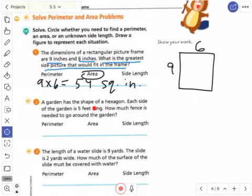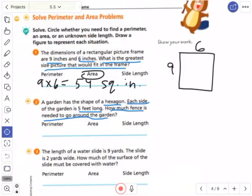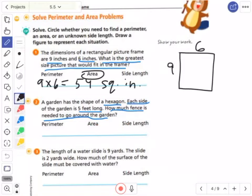Okay, and we'll go to number two. A garden has the shape of a hexagon. Okay, so right away I'm going to outline that hexagon. Each side of the garden, each side is five feet long. How much fence is needed? I'll underline my question sentence. How much fence is needed to go around the garden? So I'm trying to think, it's not asking how much is inside. It told me each side is five feet, so I'm not missing any sides. I want to know how much around.